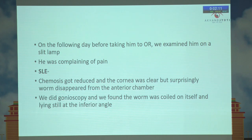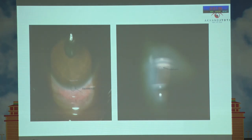Surprisingly, on the next day, the patient was complaining of pain but the worm was not visible in the anterior chamber. We performed gonioscopy and found that the worm had coiled on itself and was lying still in the anterior chamber. On slit lamp examination, it was visible inferiorly, and gonioscopy revealed the long coiled worm in the angle.